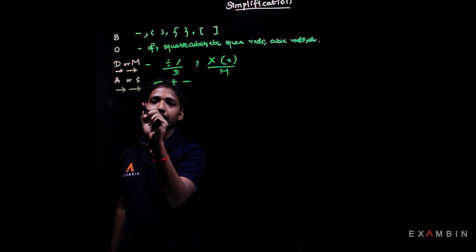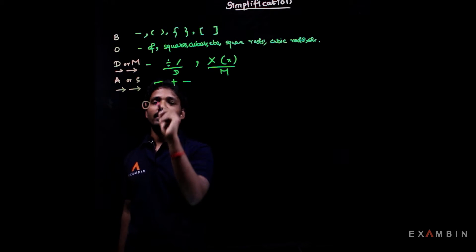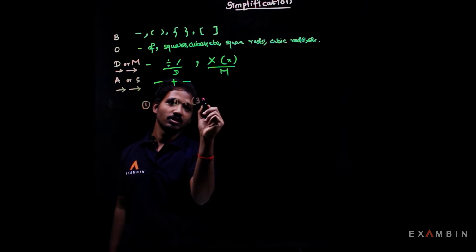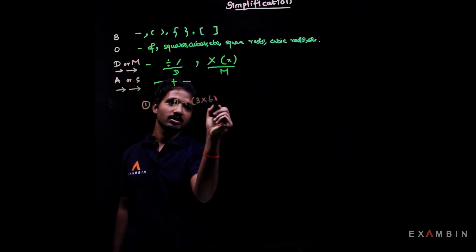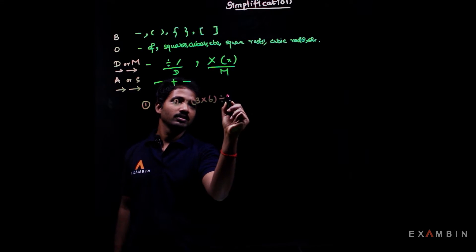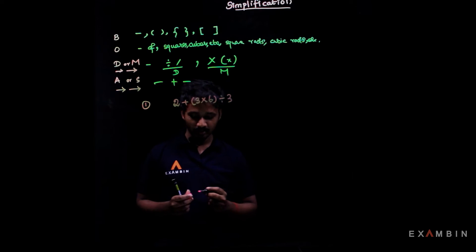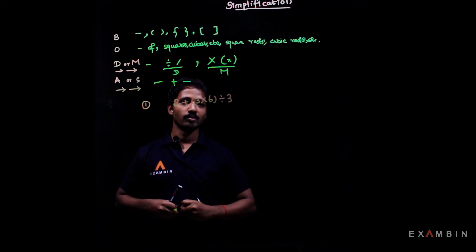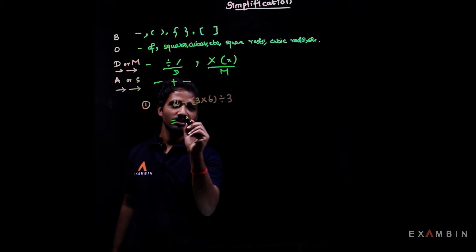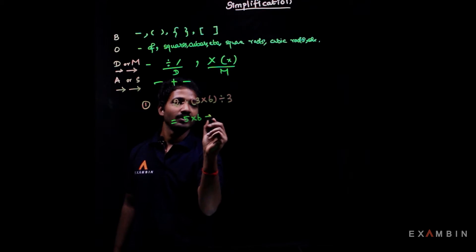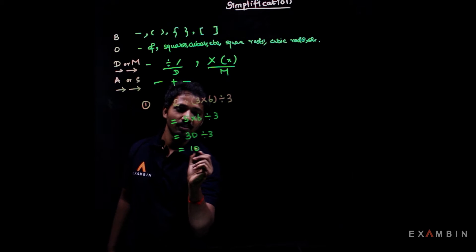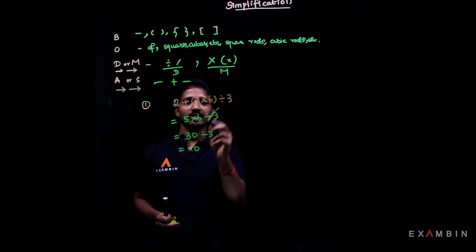The first problem is based on the BODMAS rule. Take the example: 2 plus 3 into 6 divided by 3. If we solve this normally as given from left to right, we get 2 plus 3 equals 5, then 5 into 6 equals 30, divided by 3 equals 10. But this is not the correct way to do it.